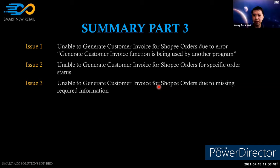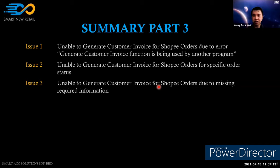Question: if a Shopee product had a variant that was matched in Dynamo, but the user then deleted the variant in Shopee, causing invoices not to auto-generate — this will be answered in the additional information section of the slides coming up.